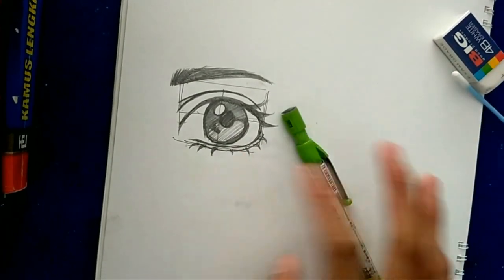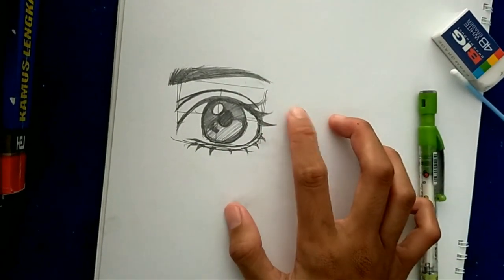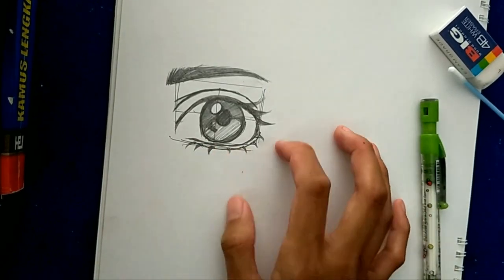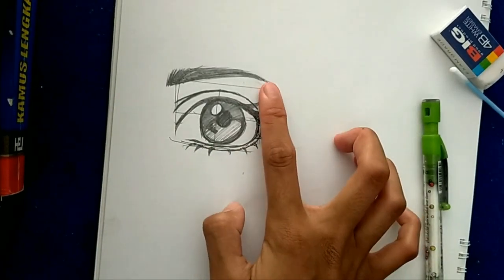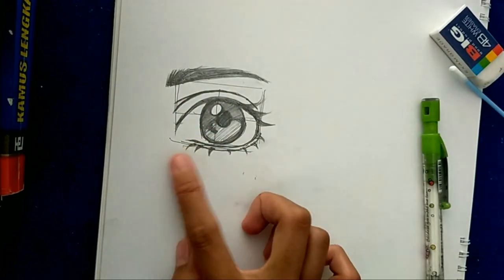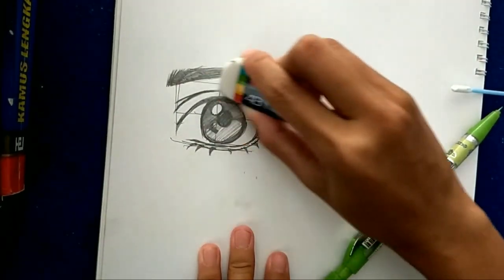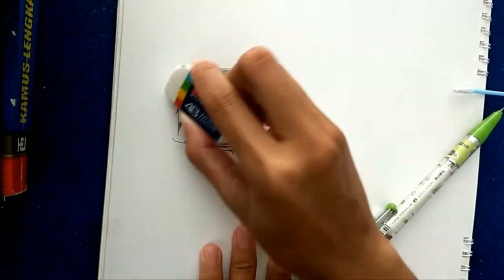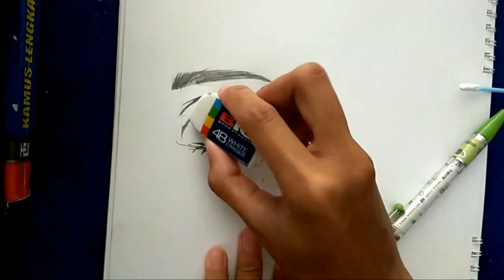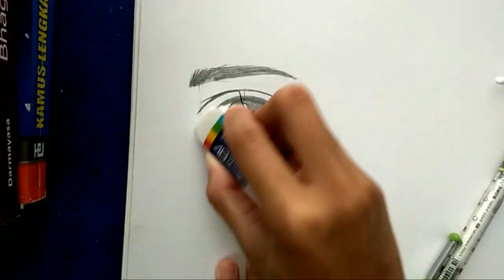Now don't you see this sketch of the eye? You should erase this with an eraser. Just slowly erase the sketch. Please be careful if you do this.